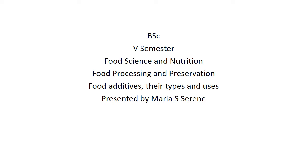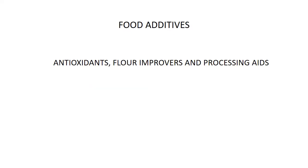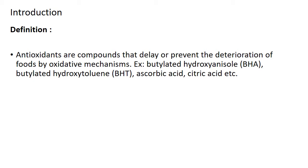Hello students. In your previous session you learned about emulsifiers and stabilizers, the types and uses. In today's session we shall learn about antioxidants, flour improvers, and processing aids. Now let us learn what are antioxidants. Antioxidants are compounds that delay or prevent the deterioration of foods by oxidative mechanisms.